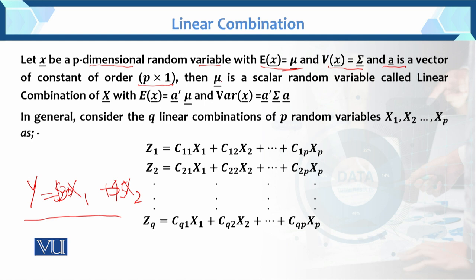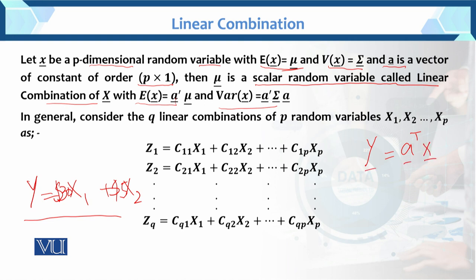Then y is a scalar random variable called the linear combination of x, with expected value equal to a-transpose mu, and variance equal to a-transpose sigma a. This is basically the theorem we apply. y is a random variable equal to a-transpose x.